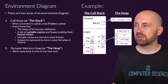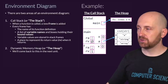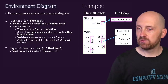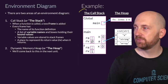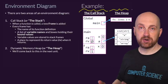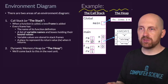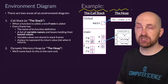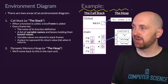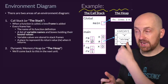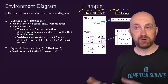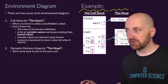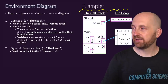So what does an environment diagram look like? There are going to be two parts to it. There are two areas of memory that we're generally concerned with. The call stack is going to contain the functions that we're working with and their variables. And the heap is going to contain what we call objects or reference types, including our function definitions, including lists, strings, and things like that.